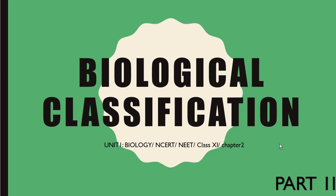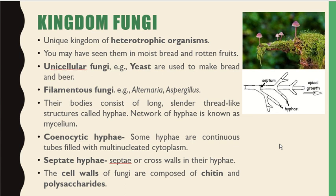Kingdom Fungi are a unique kingdom of heterotrophic organisms that obtain their organic materials from external sources. You may have seen them in moist and rotten fruits. They may be unicellular, for example yeasts used to make bread and beer, or filamentous, for example in Alternaria and Aspergillus. The body consists of long slender thread-like structures called hyphae, and the network of hyphae is known as mycelium.